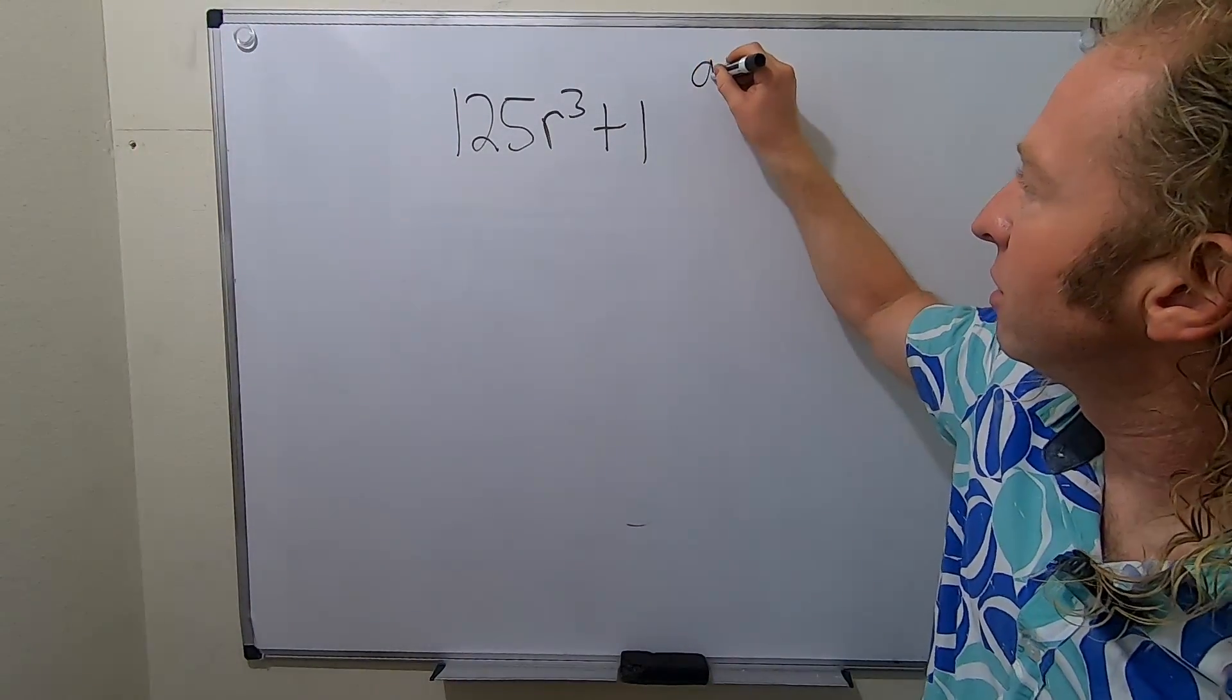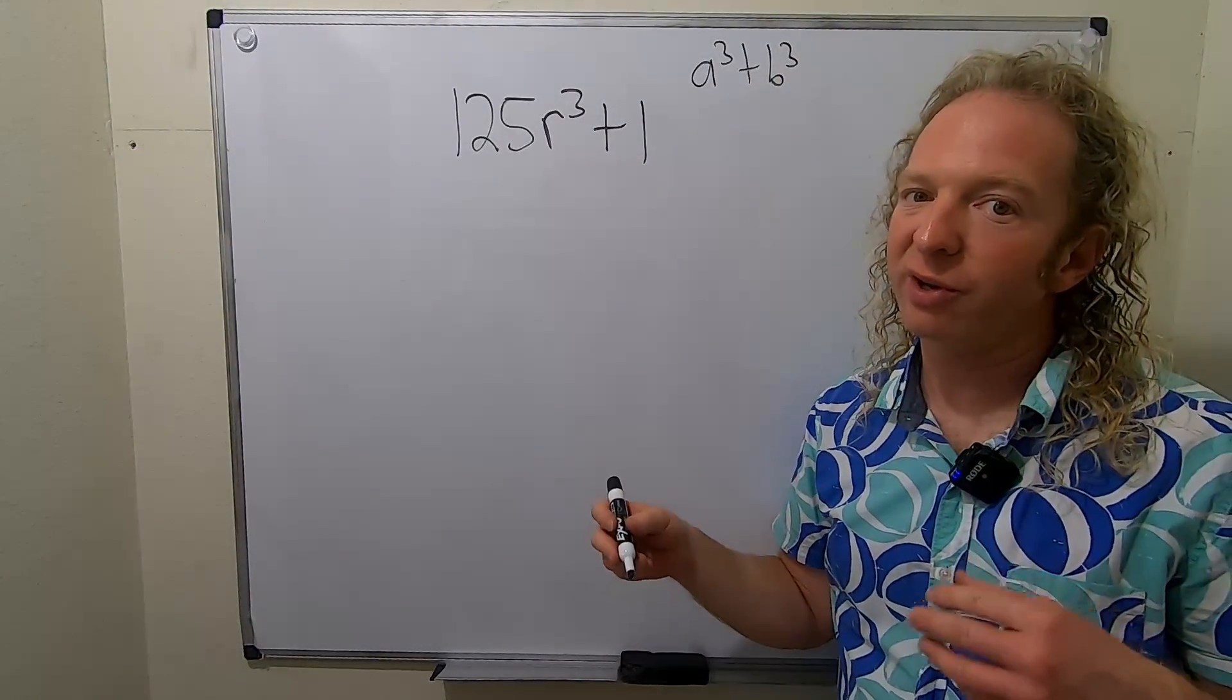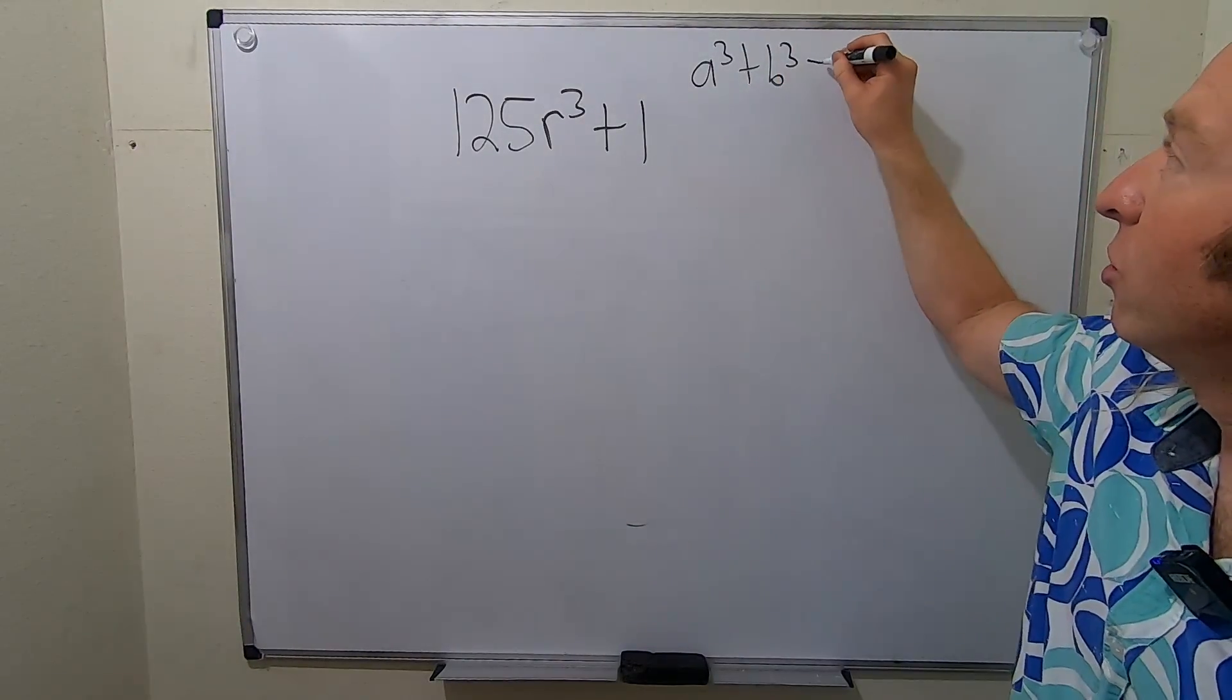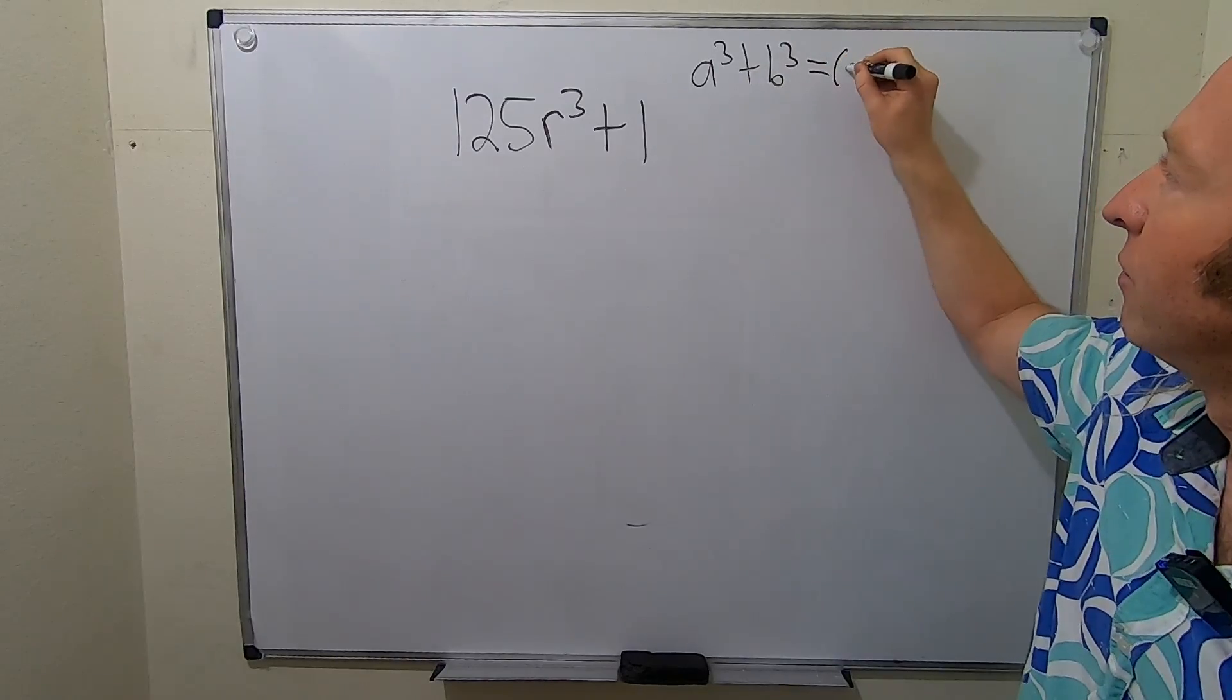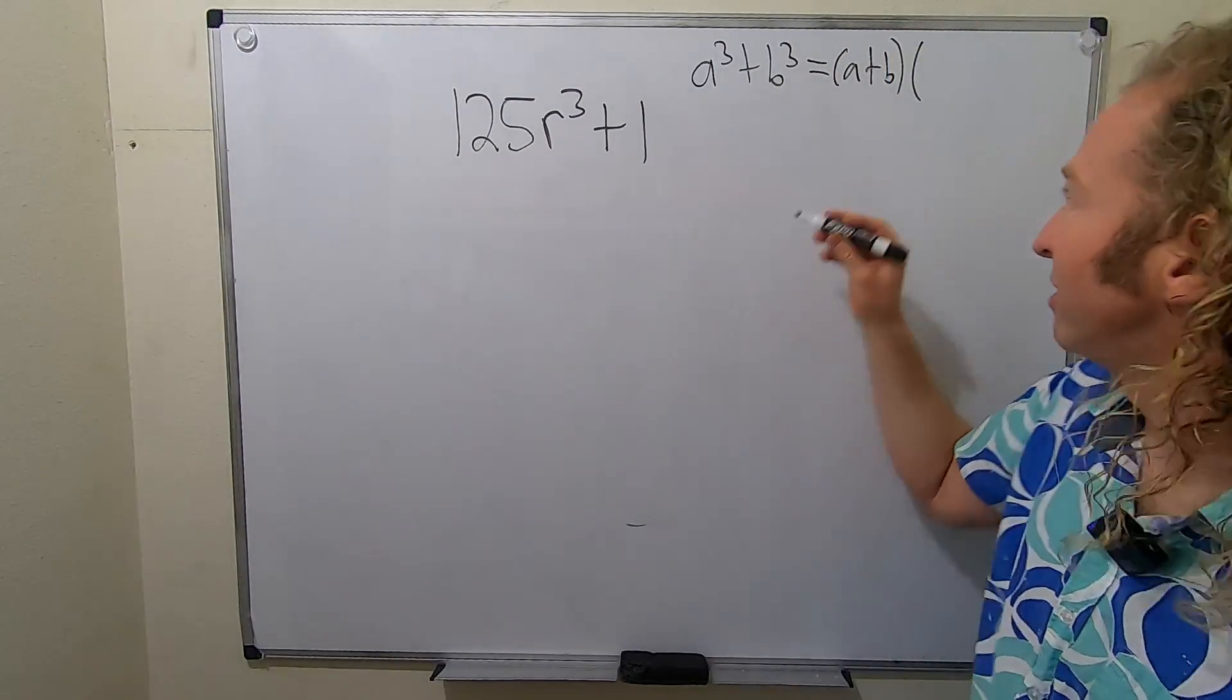there is a formula you should know for the sum of cubes. The sum of cubes formula is a³ + b³. I'm going to show you how to memorize it, or I'll show you how I memorize it. So I know that you keep the sign, and then I just know that it's a².